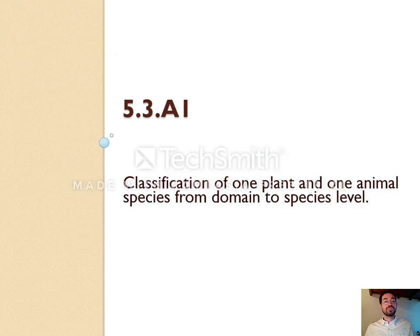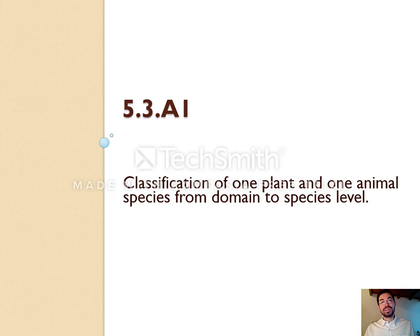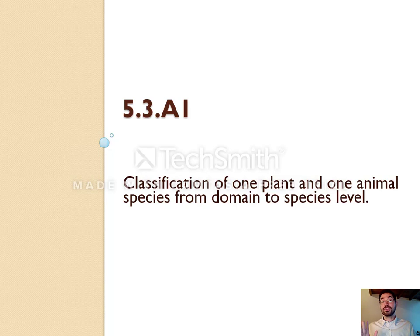You are required to know a full classification for one plant and one animal species. Knowing the animal classification — humans — is essential. The plant classification is usually only a two or three point question that comes up rarely, so memorizing it is optional, though it may be worth attempting.